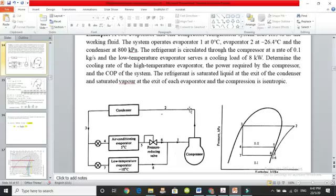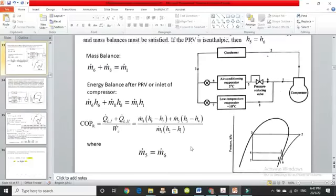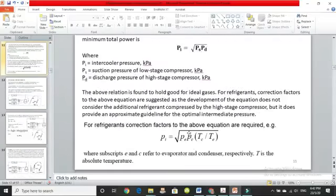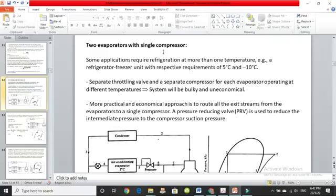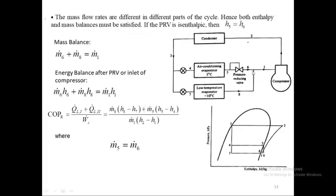The first one is for a system which has two evaporators and one compressor. This is the energy balance that we had done last time — two evaporators with a single compressor. This system utilizes a pressure reducing device and we have to do an energy or enthalpy balance after the PRV, at the inlet of the compressor at point one, and this is the mass balance between points six and one.